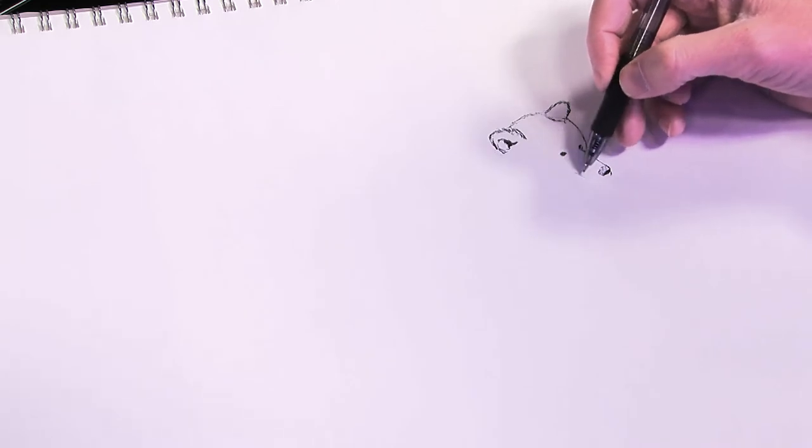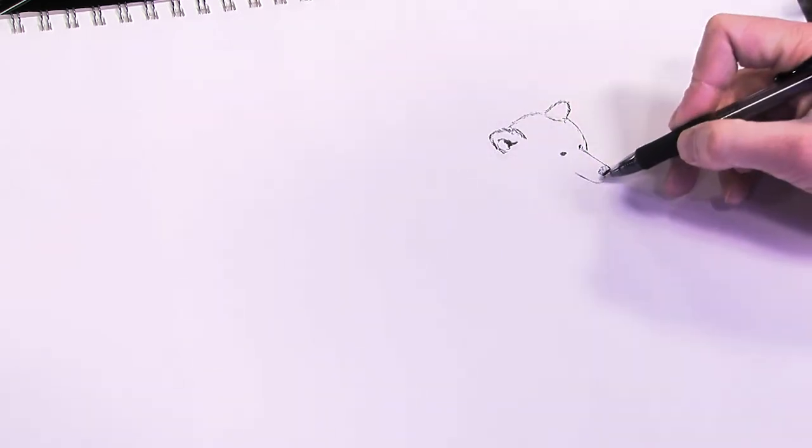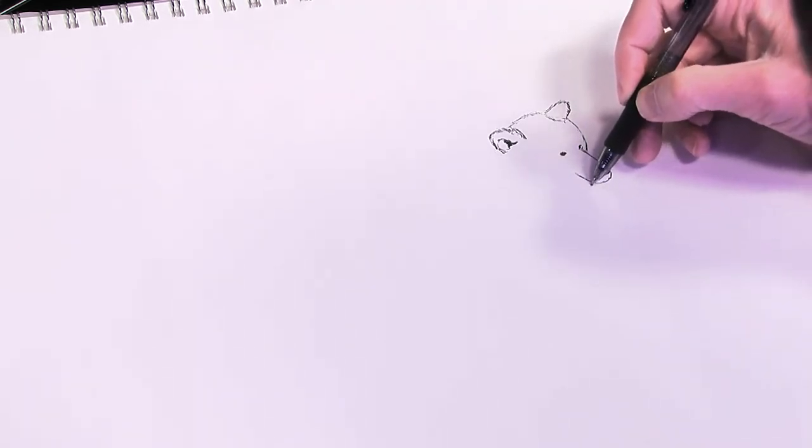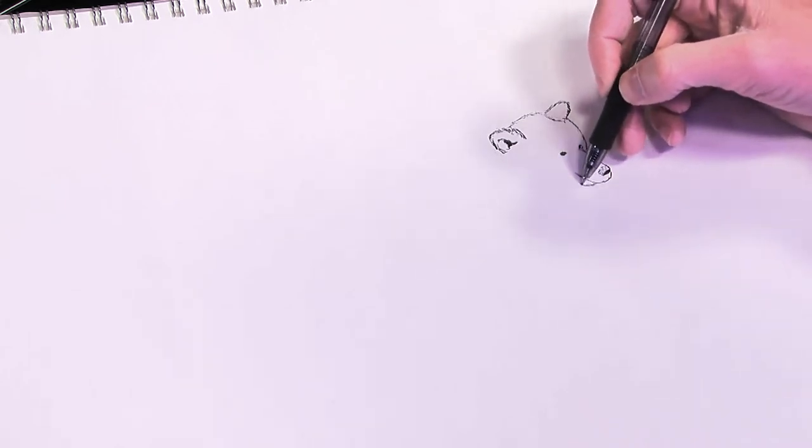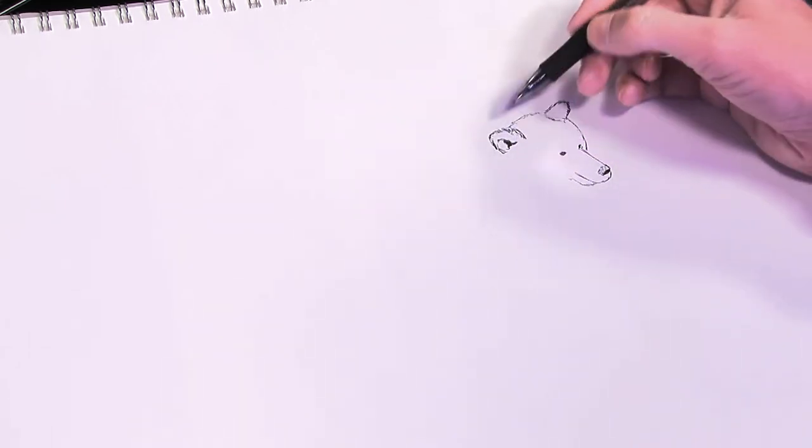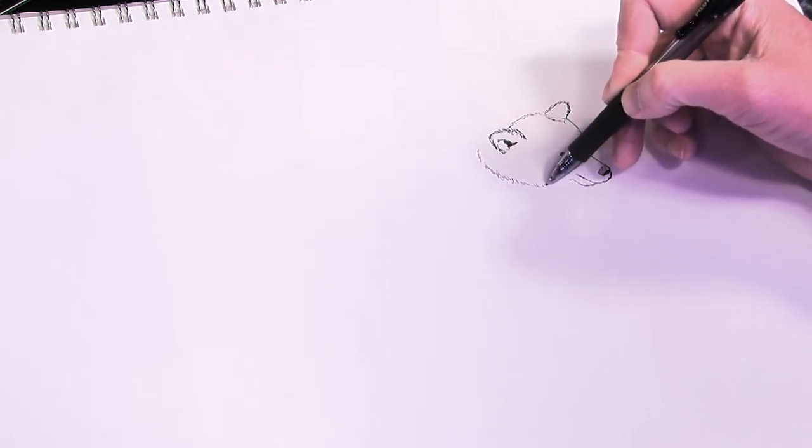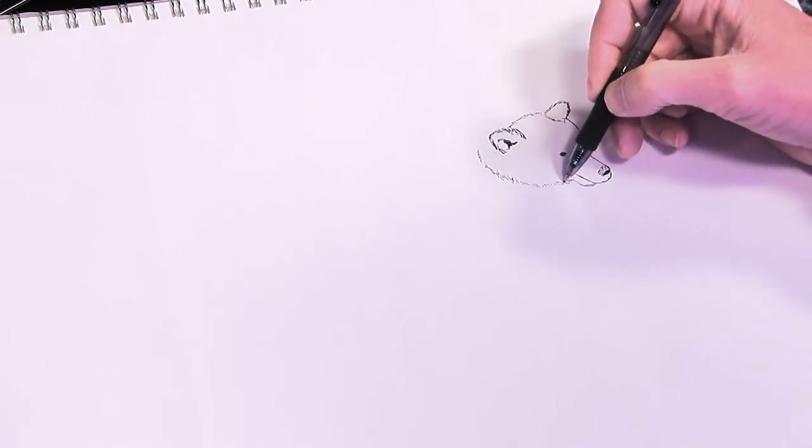Next we're going to make sort of a letter U coming from about here, joining in over there. And then break out right about here and follow parallel for a little bit. And starting way back here behind this ear, we're going to sort of scribble some fur down to the back end of the snout there.